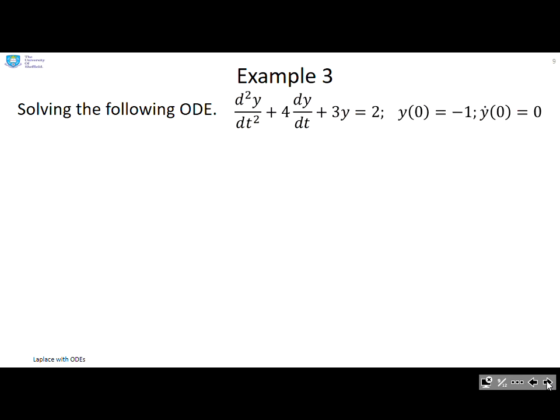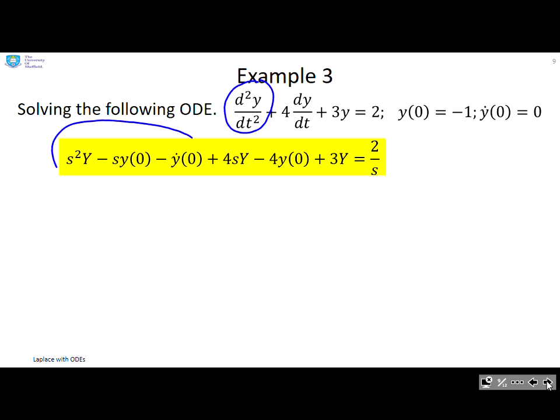Example 3: I've made this one a bit more complicated because now it's a second order ODE. But the steps are exactly the same. So first, take Laplace of every term. You can see the double derivative - there's the Laplace of the double derivative. The single derivative - there's the Laplace of the single derivative. And the 3y goes here, and the 2 goes to 2/s. So the first step: take Laplace of every term in the equation.